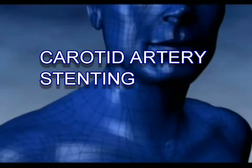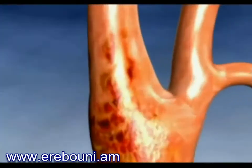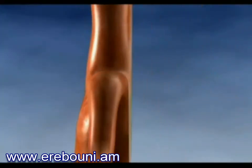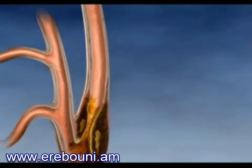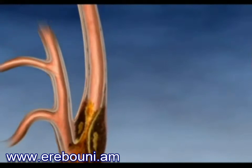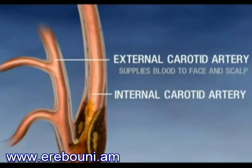Carotid arteries are located on each side of the neck and extend from the aorta to the base of the skull. These arteries supply blood to the brain. There is one main carotid artery on each side of the neck, and each of these divides into two major branches, the external and the internal carotid arteries. The external carotid supplies blood to your face and scalp, while your internal carotid supplies blood to the brain.